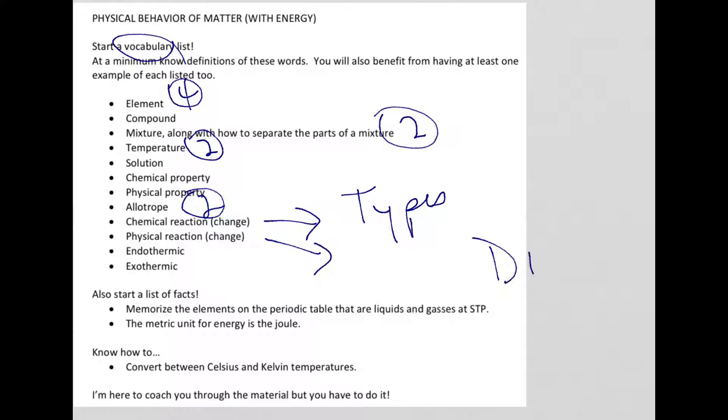You also need to know what elements are diatomic elements, where it's written with a little 2. Make sure you know them, find them. And converting between Celsius and Kelvin, there's a formula for that. Check it out on reference table T.